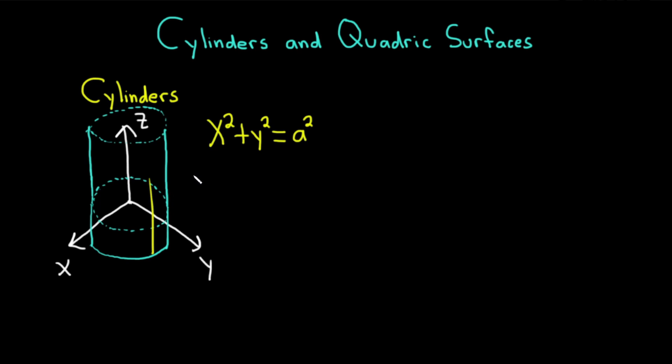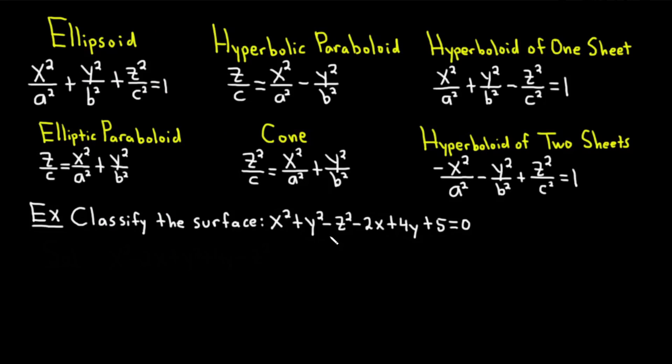Let's talk about quadric surfaces really briefly and then do an actual example of classifying a quadric surface. These are the six types of quadric surfaces. Let's go over the formulas briefly for all of these, and then we'll do an example.